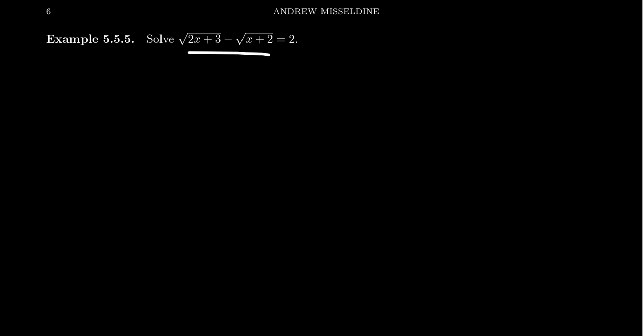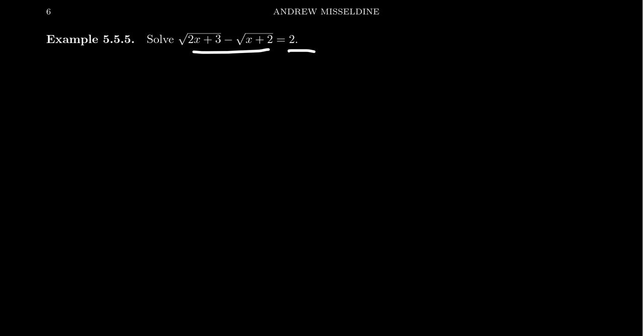Now imagine we have two radicals: the square root of 2x plus 3 minus the square root of x plus 2 equals 2. We could discuss the domain — this second radical is only defined when x is greater than or equal to negative 2. But keeping track of all this can be difficult. We're just going to solve the equation and check our solutions at the end. A negative value for x doesn't necessarily mean it's invalid — we just need the left-hand side and right-hand side to agree and be real numbers.